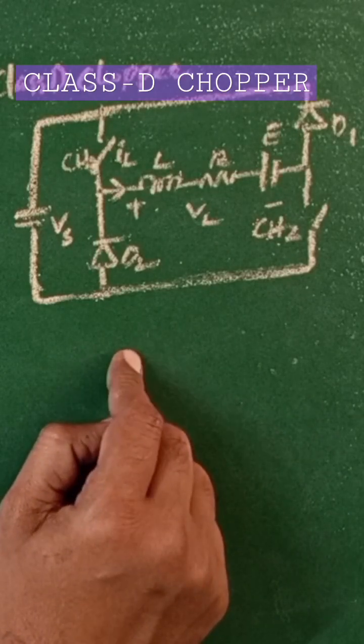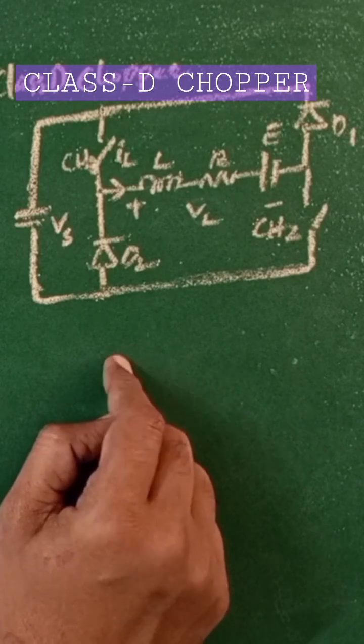Class D chopper: the load current is always positive and the load voltage is either positive or negative. Class D chopper can also be operated either as rectifier or inverter. When chopper 1 and chopper 2 are on,